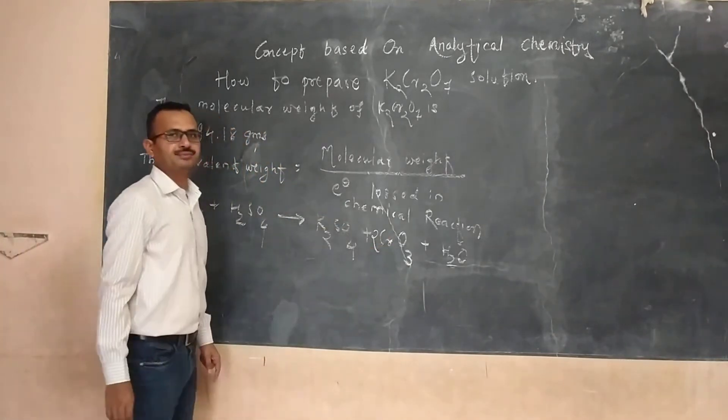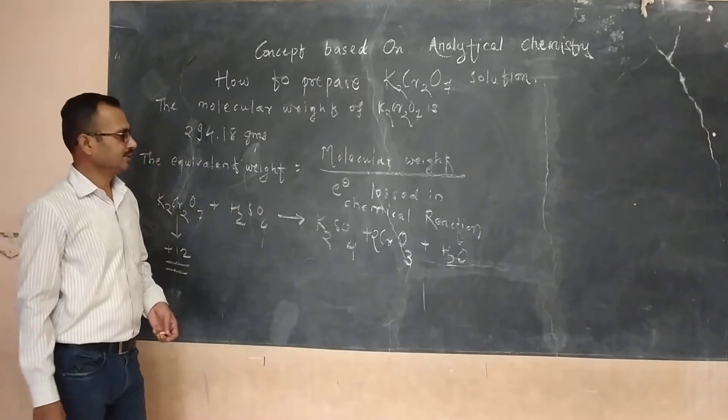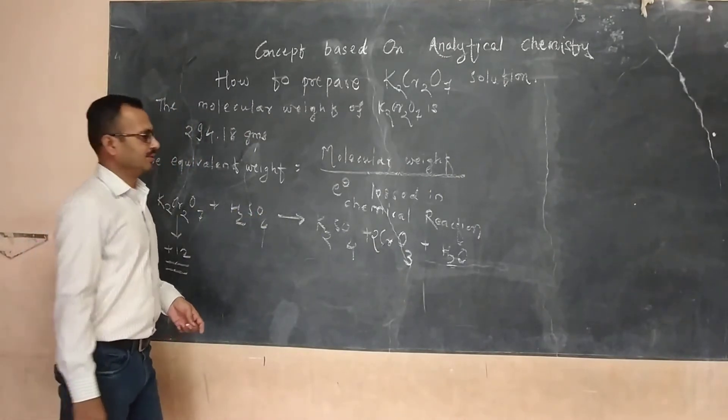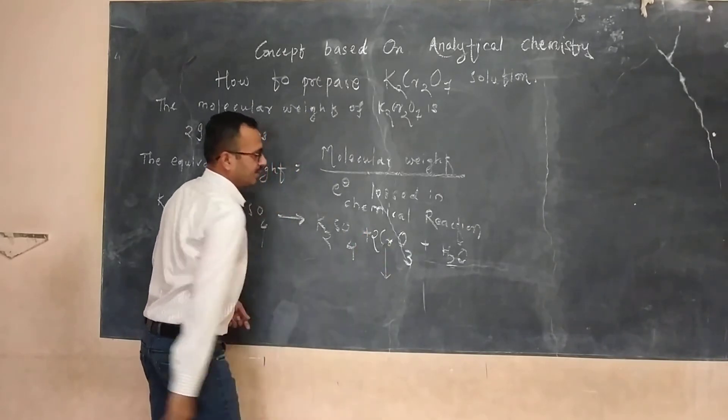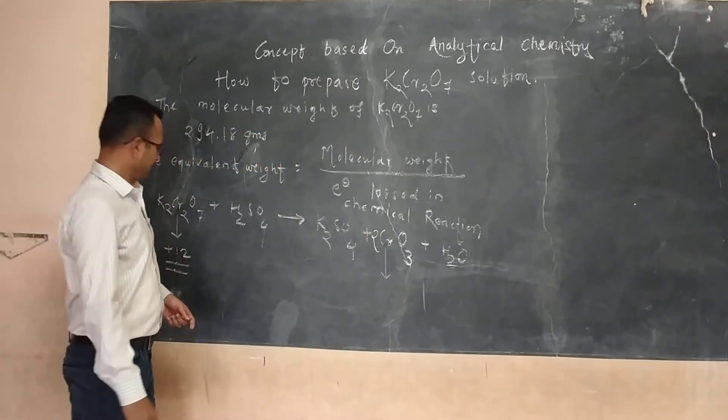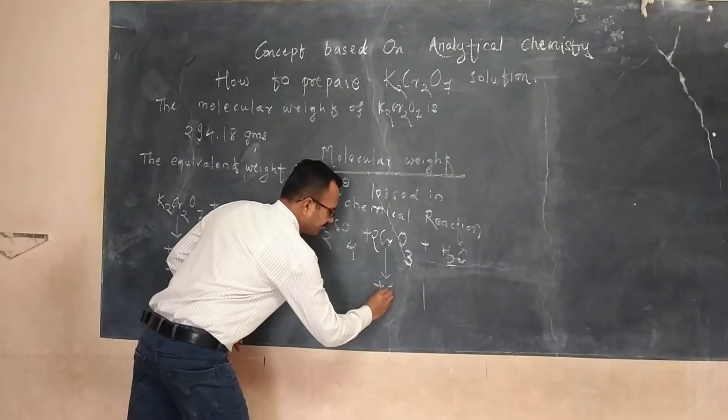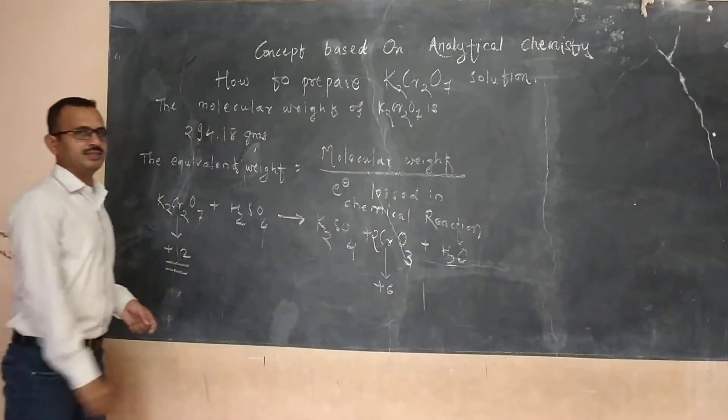In the Cr2O3, in chromic oxide, the oxidation state of chromium, if we calculate, it is plus 6.